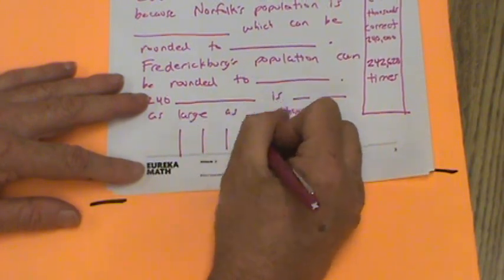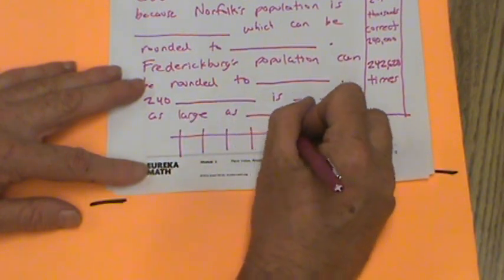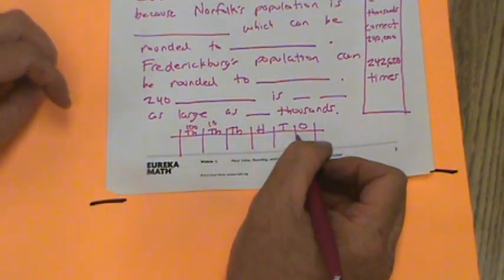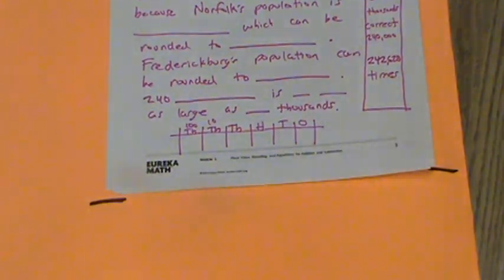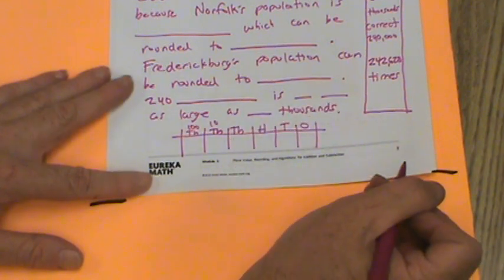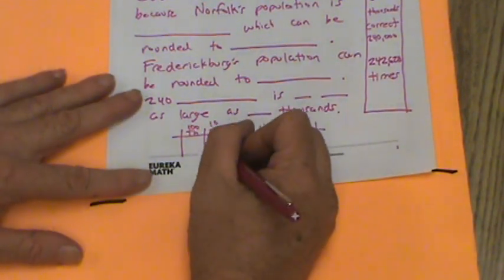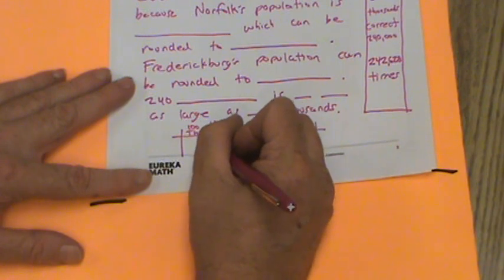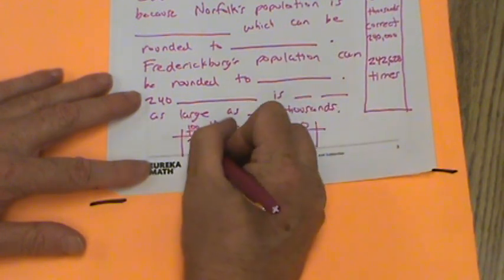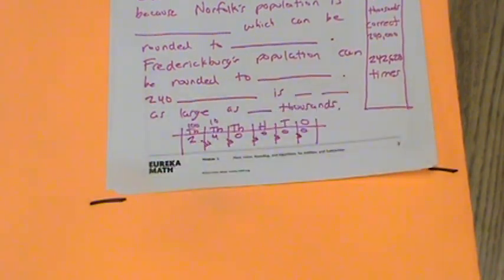Then, before we go, one more thing to do. Go ahead and pause if you need to copy all that. We're going to make a place value chart. Ones, tens, hundreds, thousands, ten thousands, one hundred thousands. I'm going to put the rounded population of Norfolk, which is 240,000. And you're going to show me using arrows the rounded population of Fredericksburg. I know you can do that.